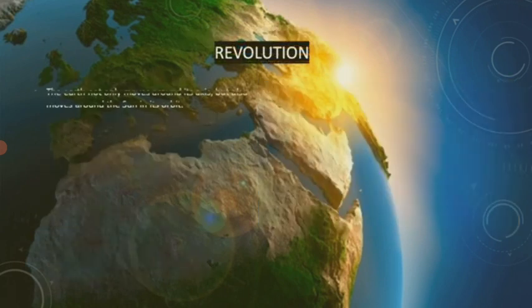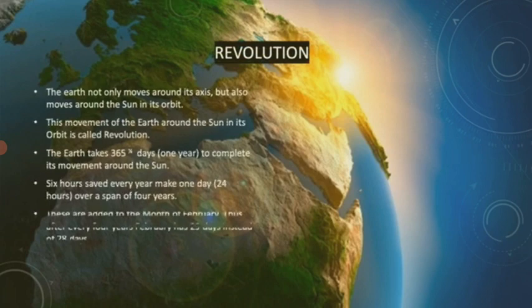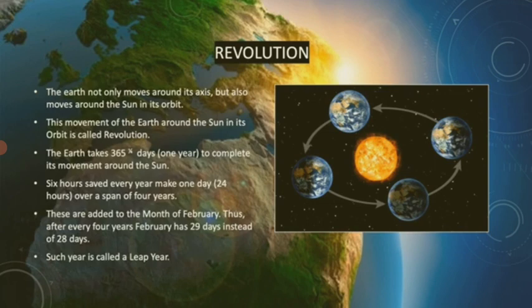Now let's talk about revolution. The Earth not only moves around its axis, but also moves around the Sun in its orbit. Orbit means path or a circular track. This movement of the Earth around the Sun in its orbit is called revolution. The Earth takes 365 and one-fourth days to complete its movement around the Sun, which means one year.